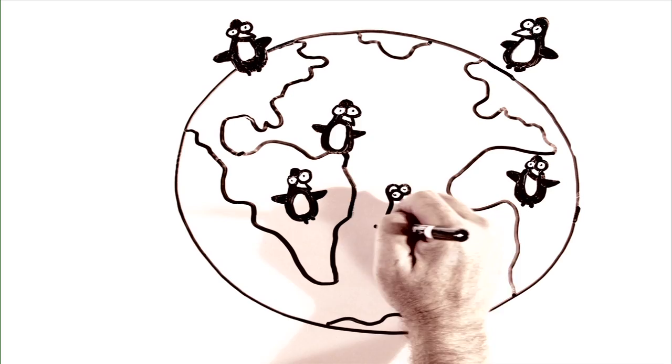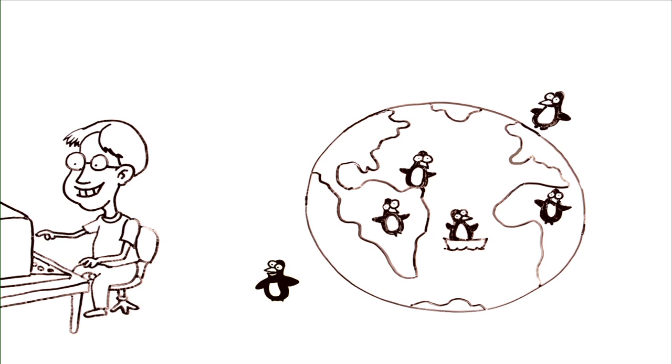Well, word of Linux open source project quickly spread around the globe, and developers from all over contributed their code. Linus named his OS kernel Linux and chose a penguin as its mascot, after a little incident at the zoo.